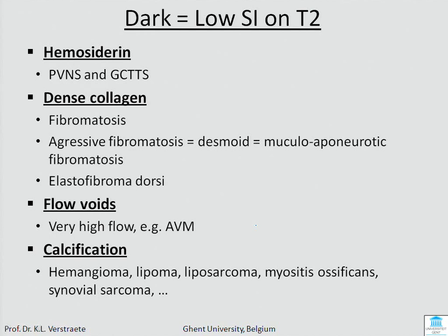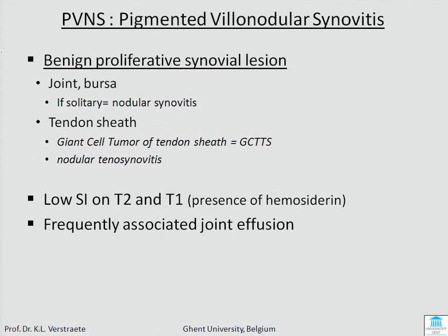Another sign is dark signal on T2 — low signal intensity — which can be hemosiderin, dense collagen, flow voids, or calcification. Let's look at PVNS, pigmented villonodular synovitis. It's a benign lesion that occurs in a joint, bursa, or tendon sheath — in the tendon sheath the pathologists call it giant cell tumor of tendon sheath, but it's the same as PVNS. It shows low signal intensity on both T2 and T1 due to the presence of hemosiderin.